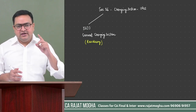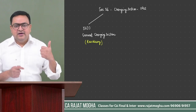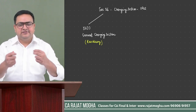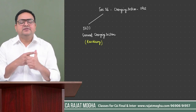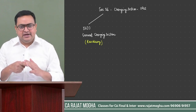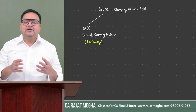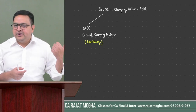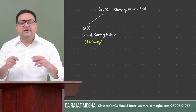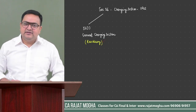If there is any income, we first check whether it is covered under salary, house property, PGBP, or capital gain. If it is covered under those sections, keep that income in those heads. But if it is not covered under those sections, then it could be chargeable under IFOS. That is the reason it is called residuary — we first check the other sections.